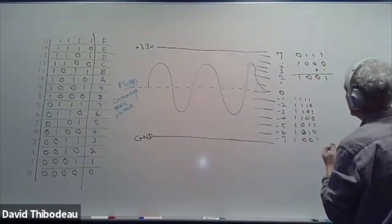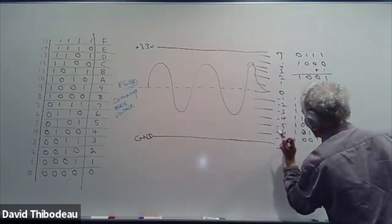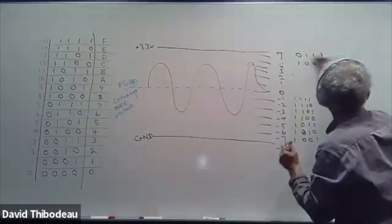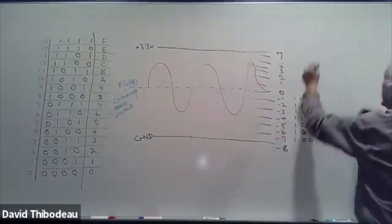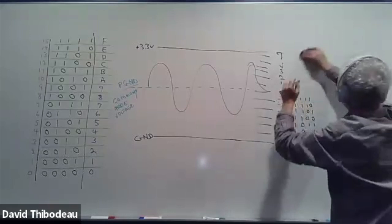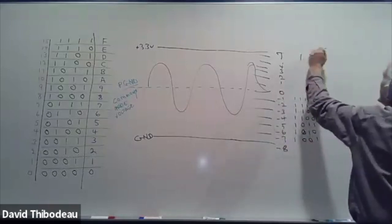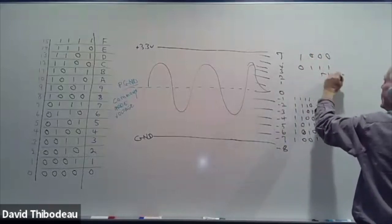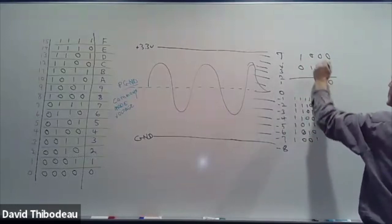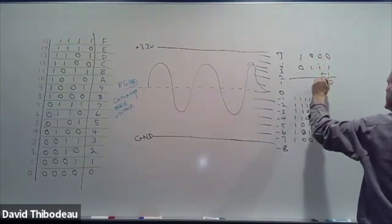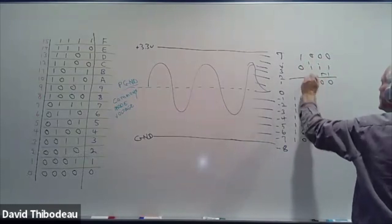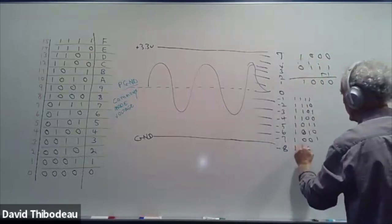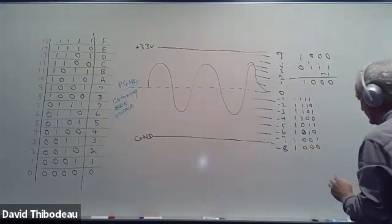And we'll have minus eight. Eight is one, zero, zero, zero. Take the complement: zero, one, one, one. Add one: one plus one is zero carry one; zero carry one; zero carry one; zero carry one. So that's one, zero, zero, zero — and that's minus eight.